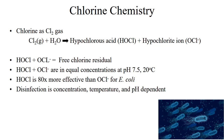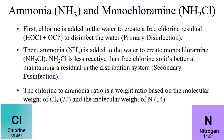Before ammonia is fed, the water is disinfected with free chlorine. This is primary disinfection, and its purpose is to remove pathogenic or disease-causing organisms from the water. Then ammonia is added to create a secondary disinfectant, monochloramine. Monochloramine is not as reactive as free chlorine, meaning it is more stable and lasts longer. Therefore, it's better than free chlorine for maintaining a disinfectant concentration, or residual, in the distribution system.